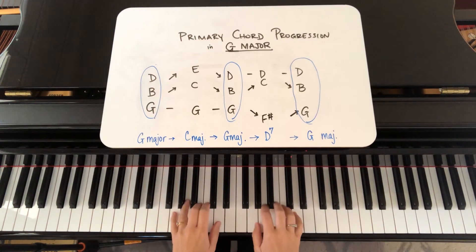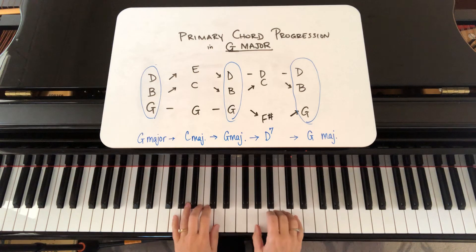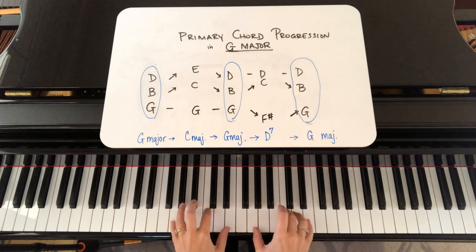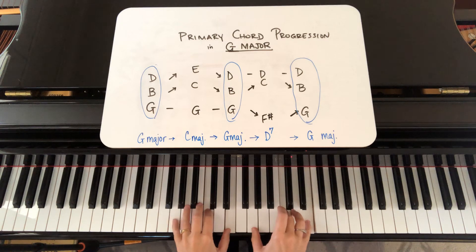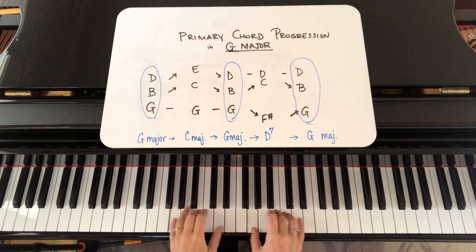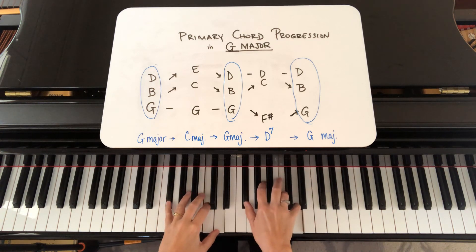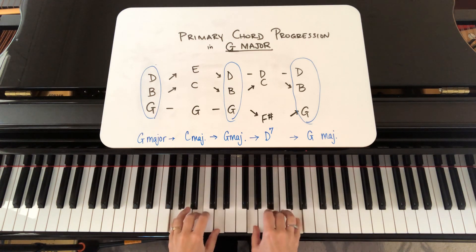This is the G major primary chord progression, starting from the G major triad G B D, moving to the C major triad with G on the bottom G C E, back to G major G B D, then progressing to the D7 dominant F sharp C D, and back to G major G B D.